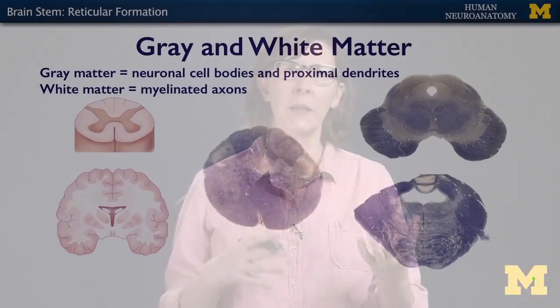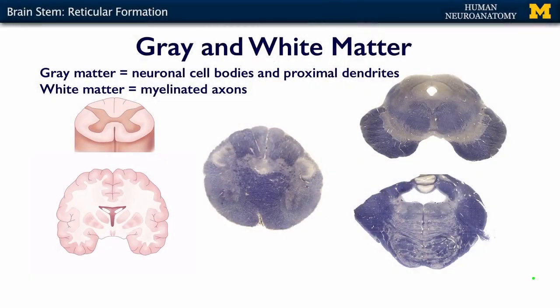When we talk about the brainstem and very specific levels of the brainstem and the cranial nerve nuclei, way back in the beginning of this series when we were discussing the gross anatomy of the nervous system, we talked a little bit about gray matter and white matter. Gray matter: neuronal cell bodies and proximal dendrites. White matter: myelinated axons bundled together to form tracts, and some tracts are then bundled together to form funiculi, and so on.